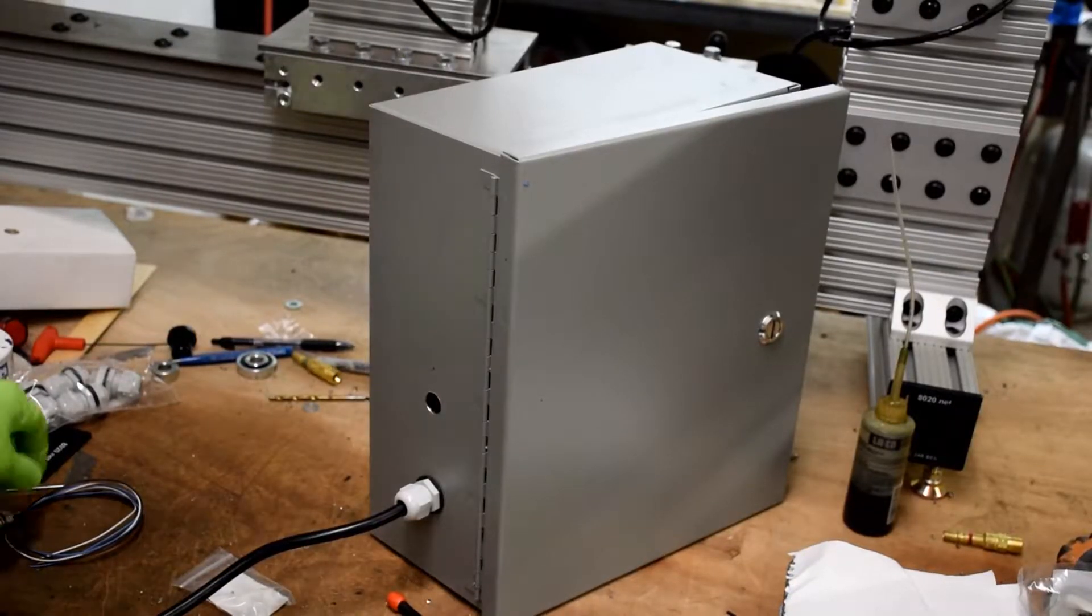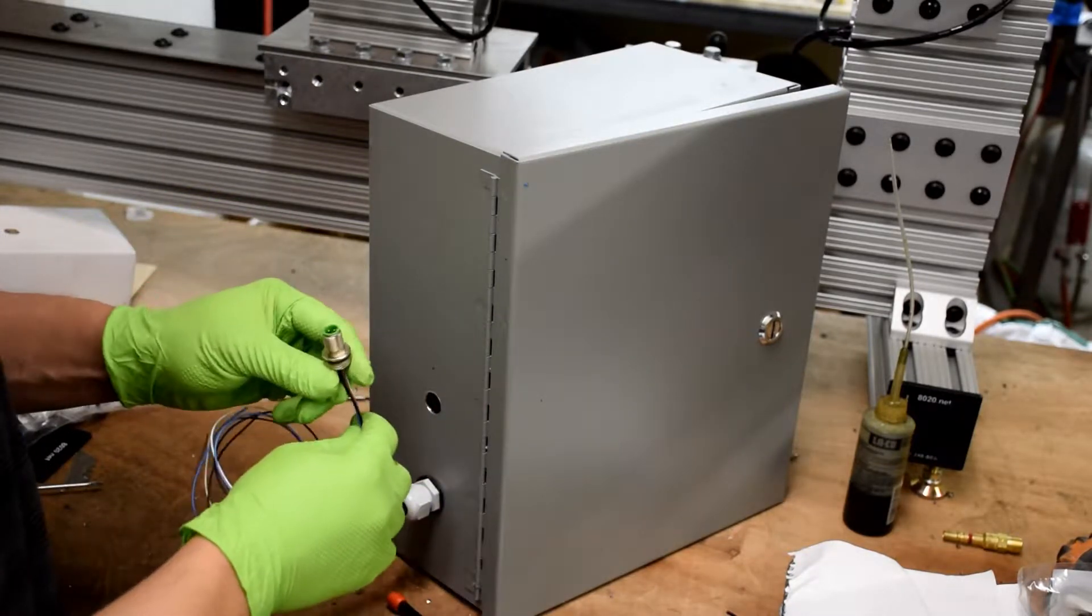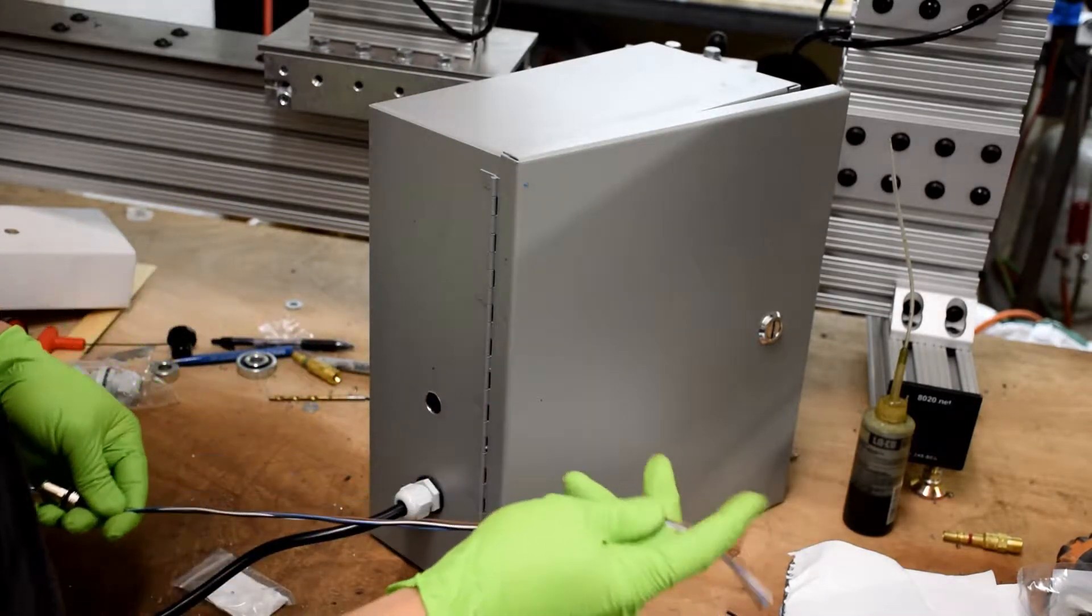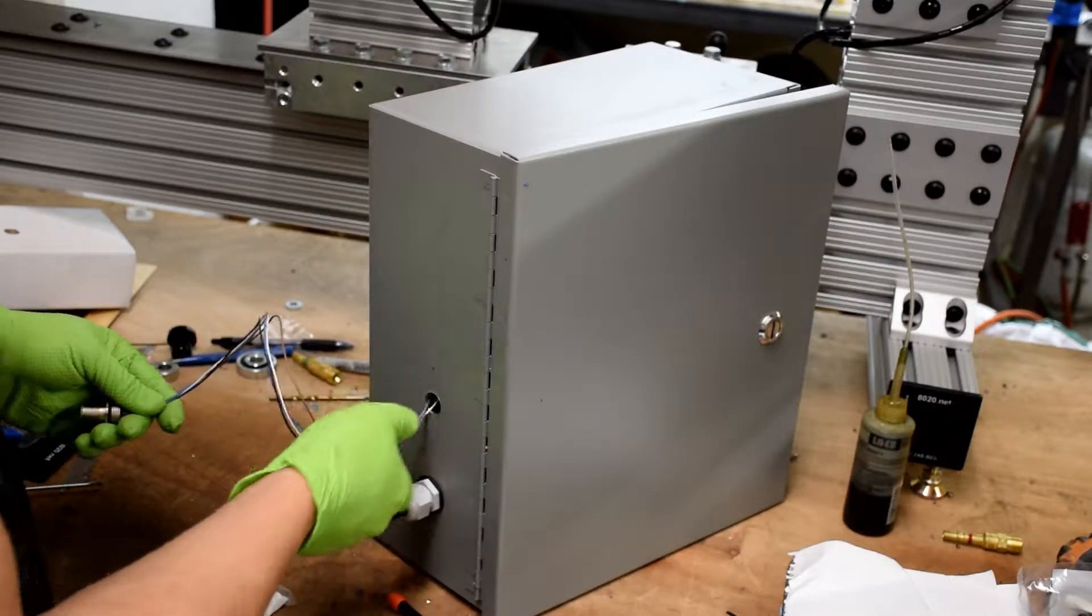Our speed control wiring is done, and the next thing we need to do is mount the enclosure. But before that, we need to attach this M12 bulkhead connector into the enclosure.